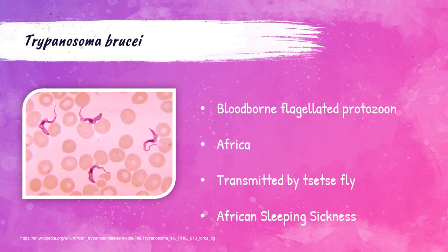Trypanosoma brucii is a blood-borne parasite present in African countries, transmitted by the bite of the tsetse fly. It's responsible for African sleeping sickness, which causes fatigue, very high fever, muscle aches, and even death. These are flagellated parasites — not intracellular; they're not within the red blood cell but rather hanging out within the bloodstream.